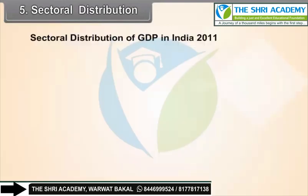Sectoral distribution of GDP in India, 2011. Sectoral distribution of GDP is an index which measures the economic development of a country. In India, the contribution of the secondary and tertiary sector in GDP is rising, which indicates an increase in India's economic development.